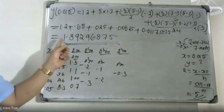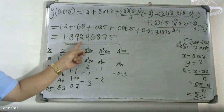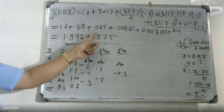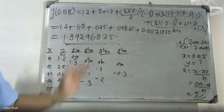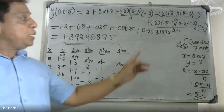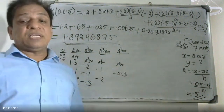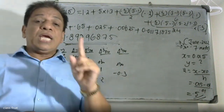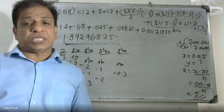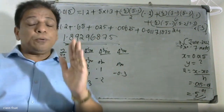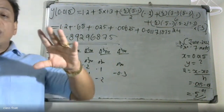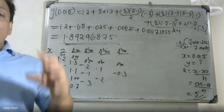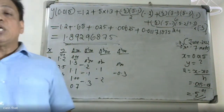The final answer is y(0.015) = 1.89296875. This is the answer obtained using Newton's forward interpolation formula.